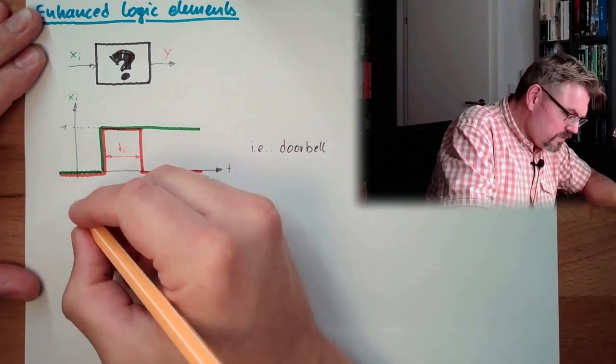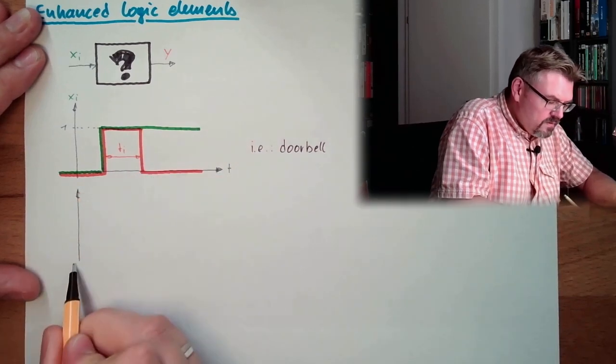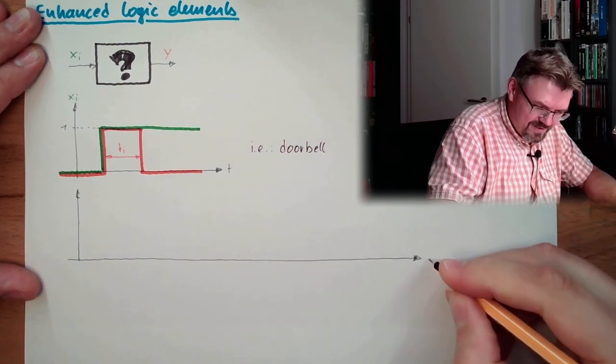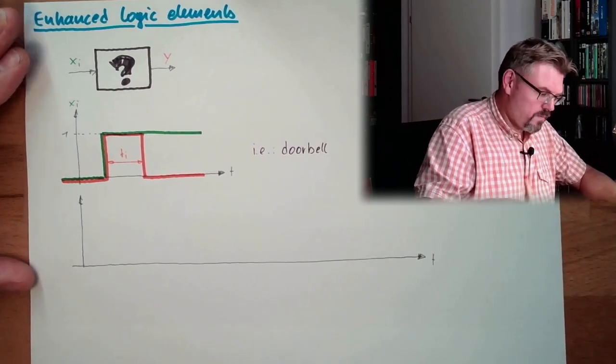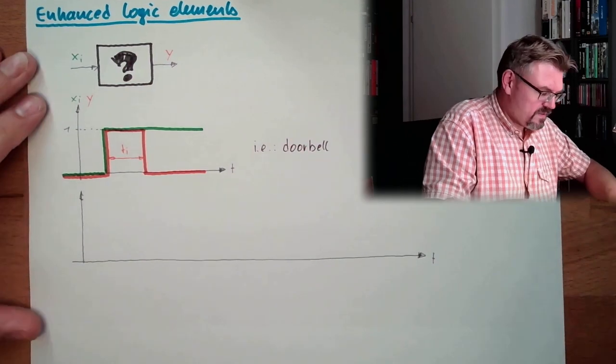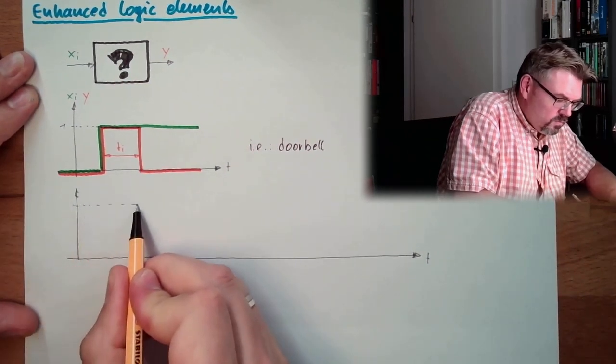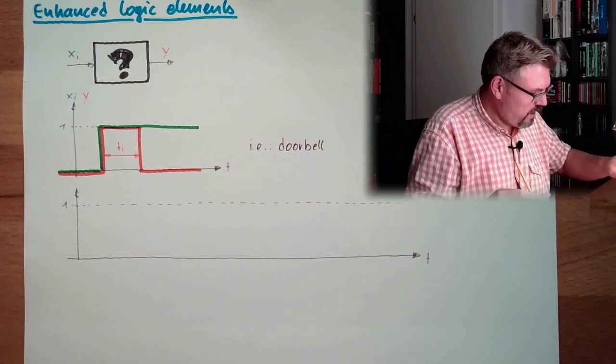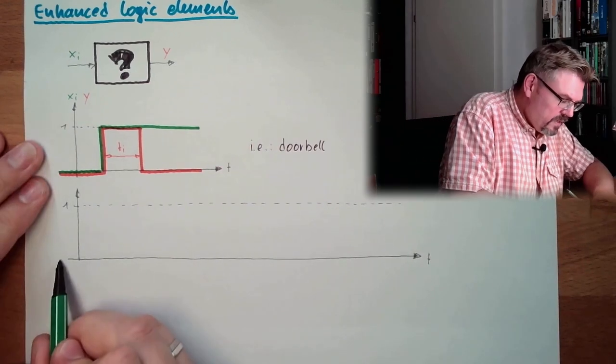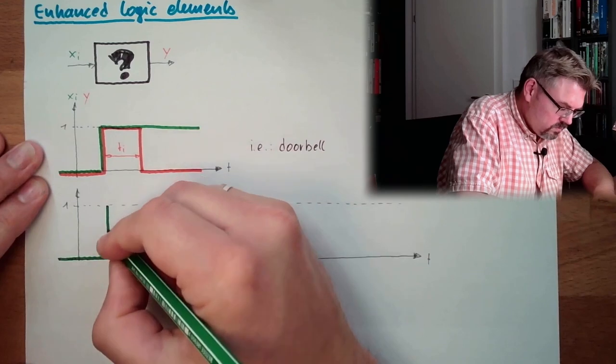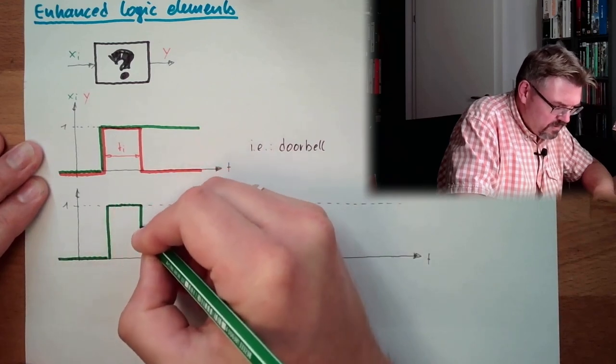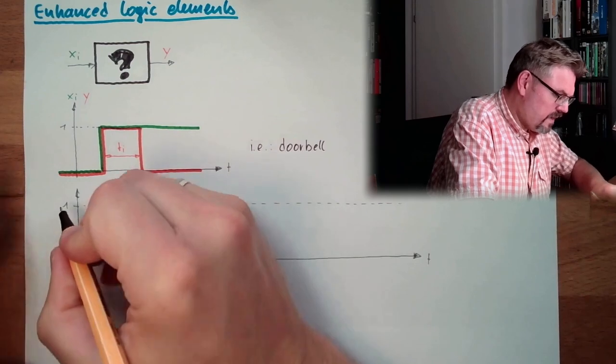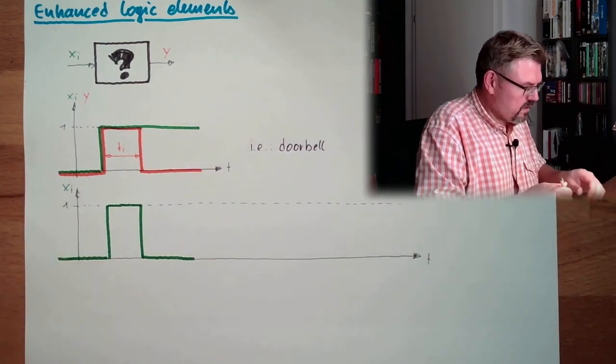Then another possibility would be like that. Here, we have somewhere one state. We have logically one. And we say, all right, we have the input. And the input is changing to one. And after a certain time, it disappears. What might the output do?